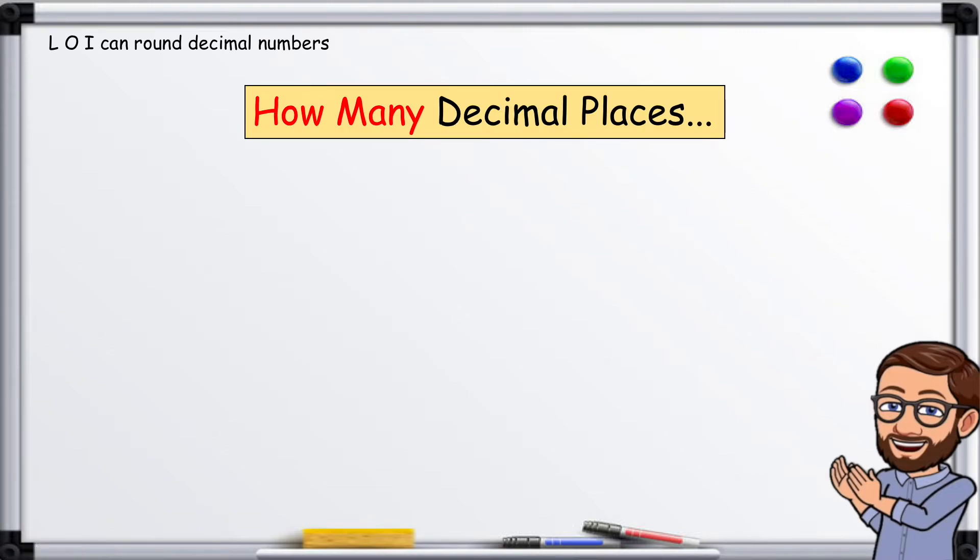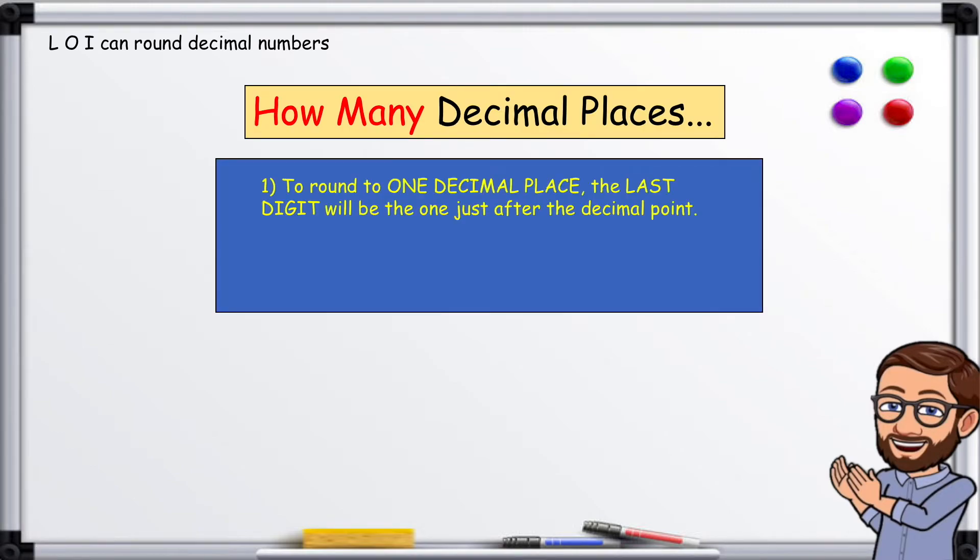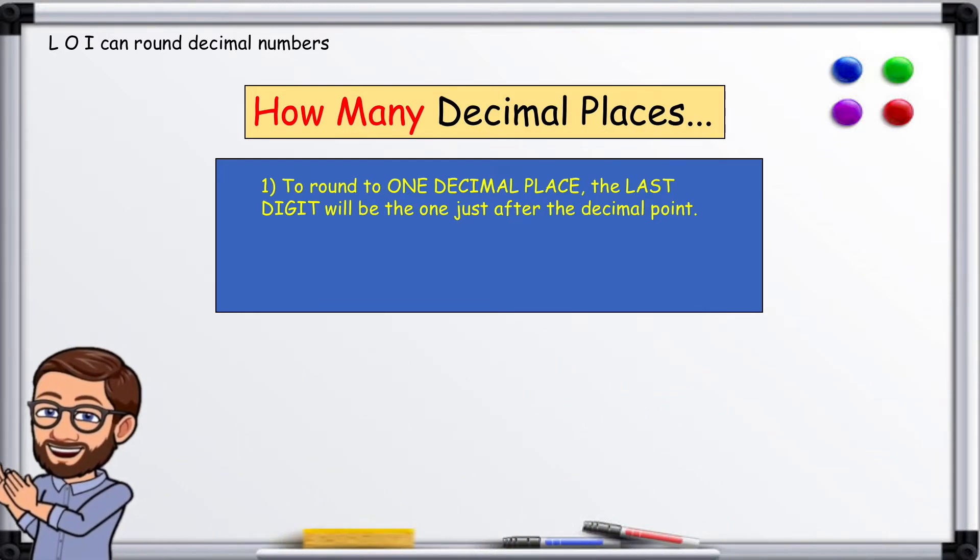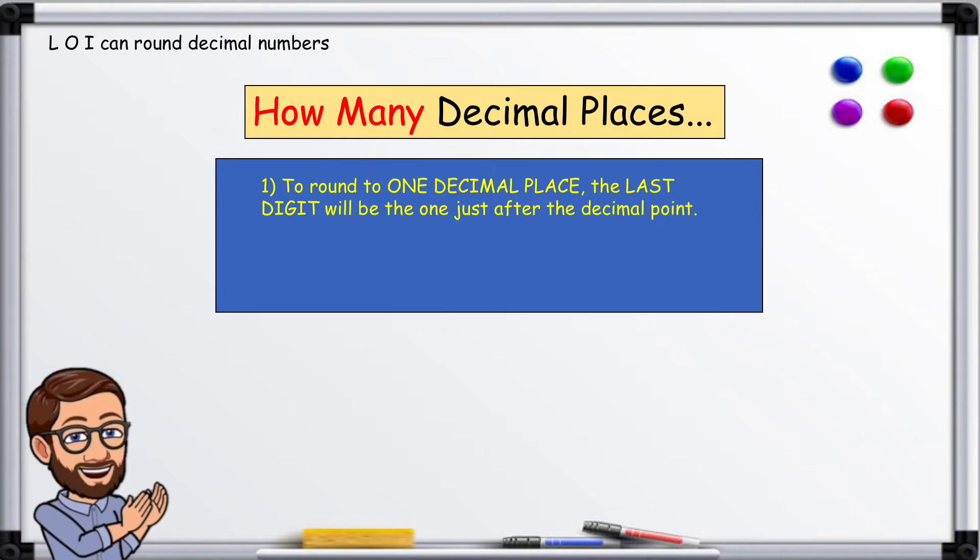How many decimal places? To round to one decimal place the last digit will be the one just after the decimal point. There must be no more digits after the last digit not even zeros.